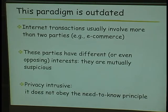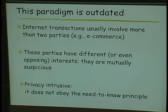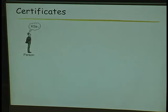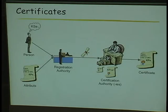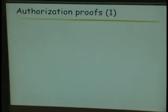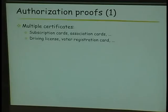Anyway, the client-server paradigm is outdated. You have more than two parties usually; these parties have different and opposing interests, so they should not trust each other — they are mutually suspicious. This scheme is also problematic for privacy. What should be done is to prove that you are authorized to do something without disclosing your identity. One way is to have multiple certificates for all the applications you need.